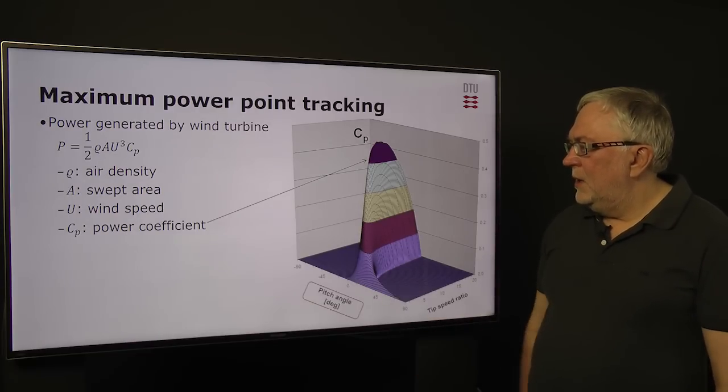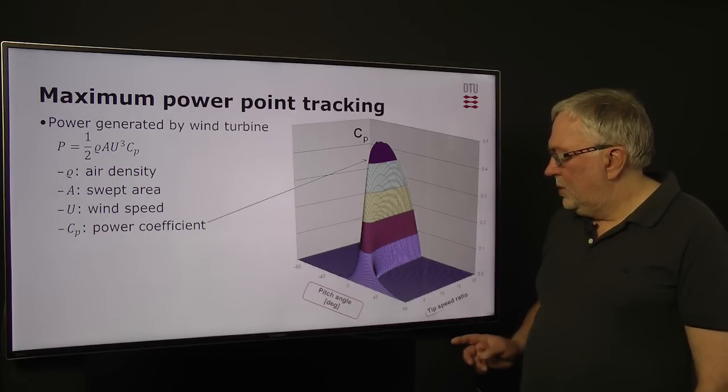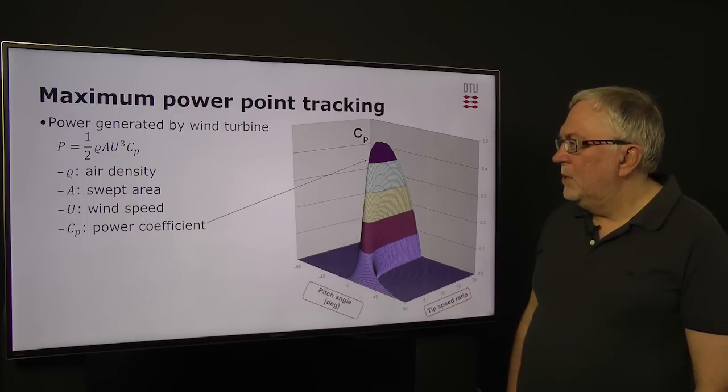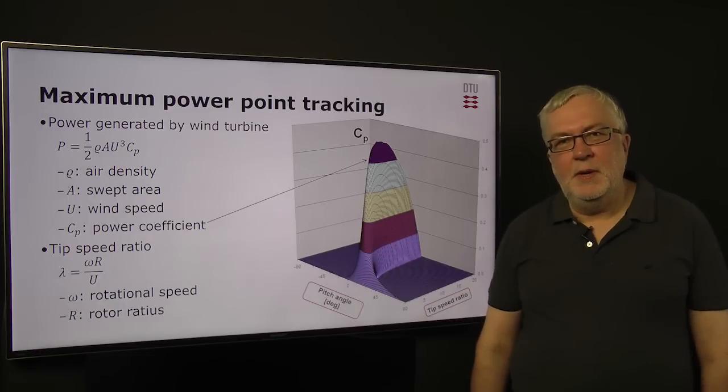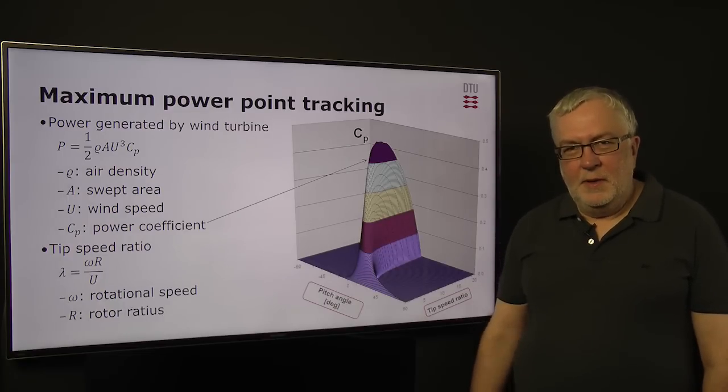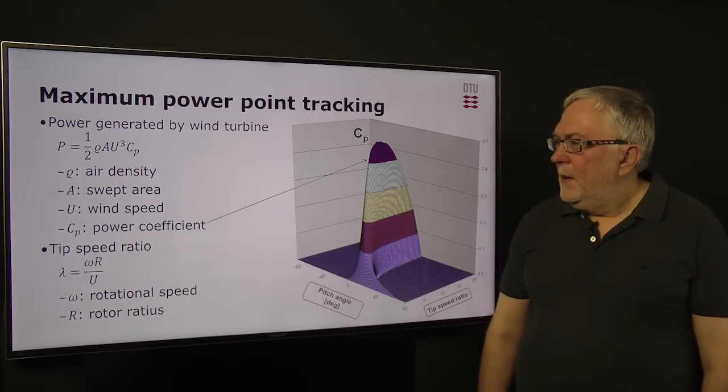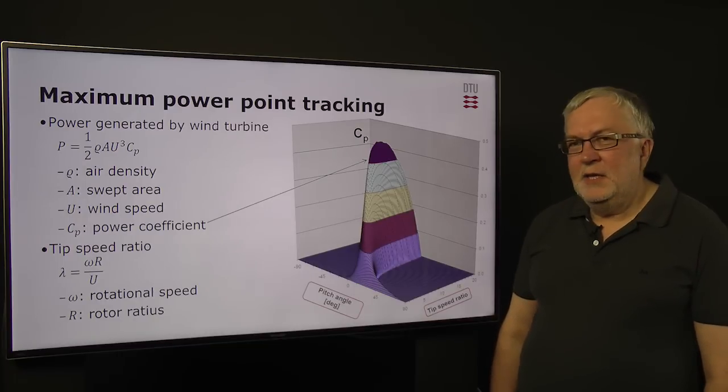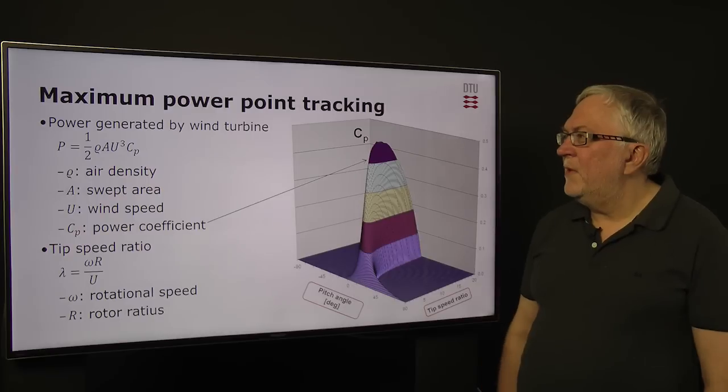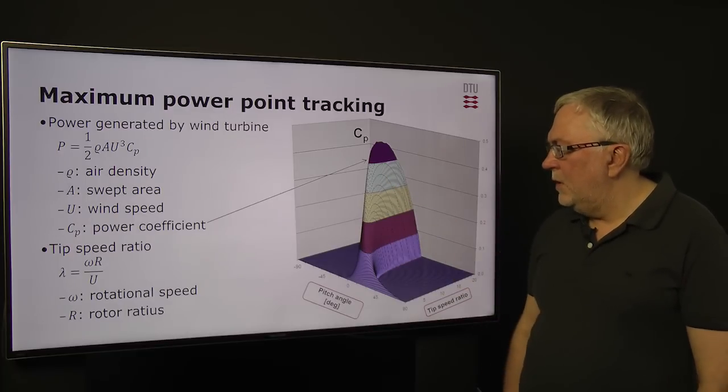And we can see that the power coefficient depends on the pitch angle. It also depends on the tip speed ratio, and the tip speed ratio is the ratio between the speed of the tip of the blades to wind speed. Now the point is that we can see easily from the power equation we want to have as high cp as possible, and in order to do that we should stay on the top of this curve.